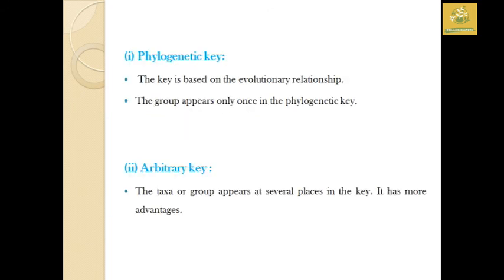Keys are classified based on the evolutionary principle into phylogenetic keys and arbitrary keys. In a phylogenetic key, the key is based on evolutionary relationships and a group may appear only once. In an arbitrary key, taxa or groups may appear at several places; it has more advantages when compared to the phylogenetic key.